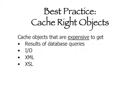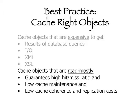The best candidates for caching are results of database queries, results of heavy IO, XML transformations and XSLT transformations. Cache objects that are read mostly.